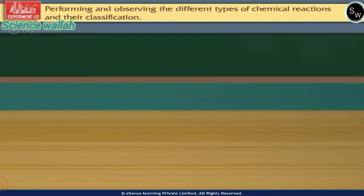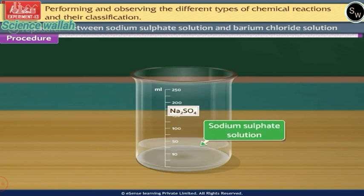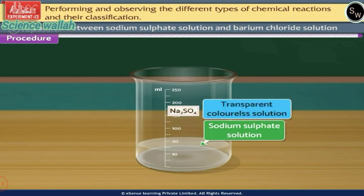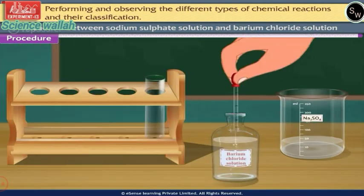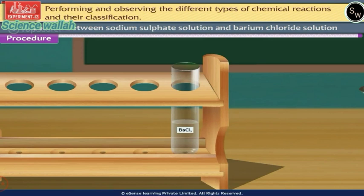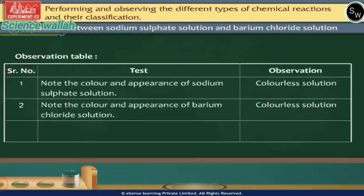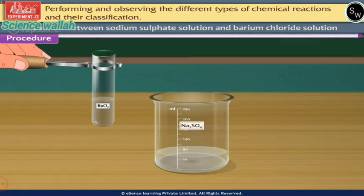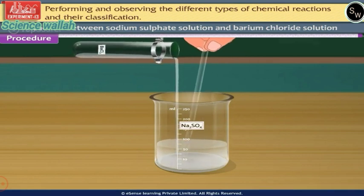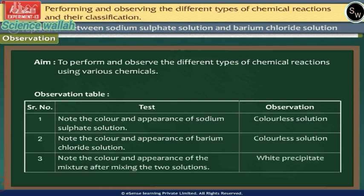Now let us study the last chemical reaction: the reaction between sodium sulphate solution and barium chloride solution. Procedure: Take about 15ml of sodium sulphate solution in a clean beaker — it is a transparent colourless solution. Take about 5 to 10ml of barium chloride solution in a clean test tube — it is also a transparent colourless solution. Slowly add barium chloride solution to sodium sulphate solution with constant stirring.